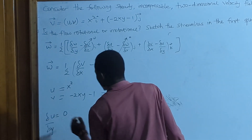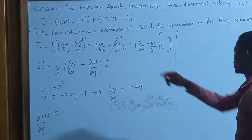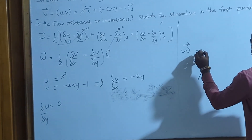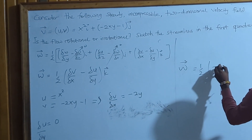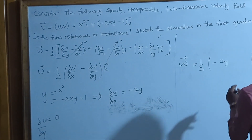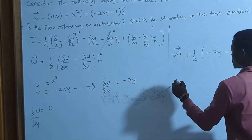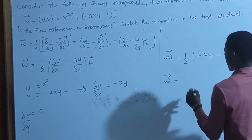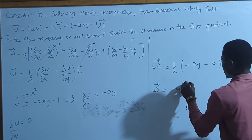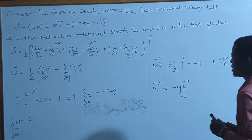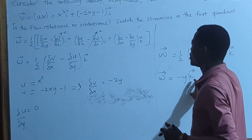The partial differential of u with respect to y means differentiating x squared with respect to y, which gives us zero. Substituting into the formula, we have one half times (minus 2y minus 0) in the k direction. So omega equals minus y in the k direction.